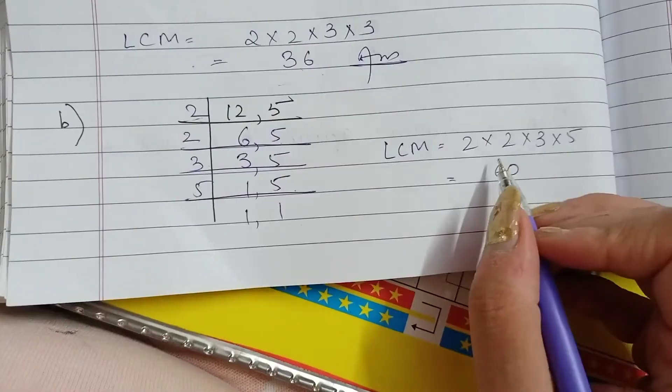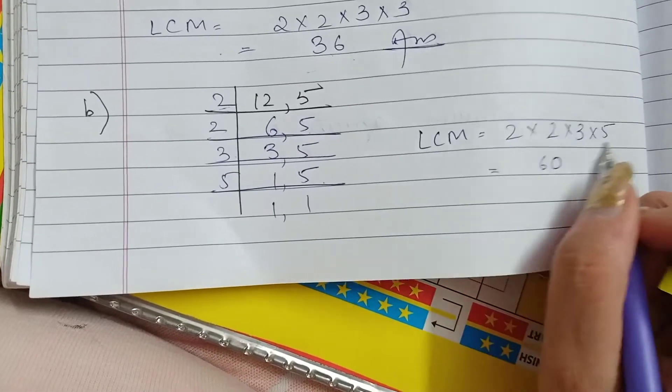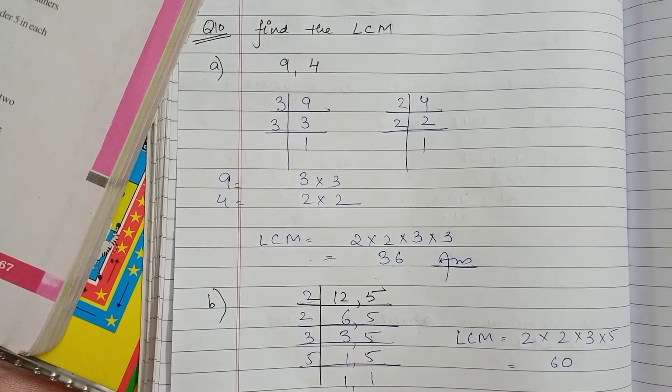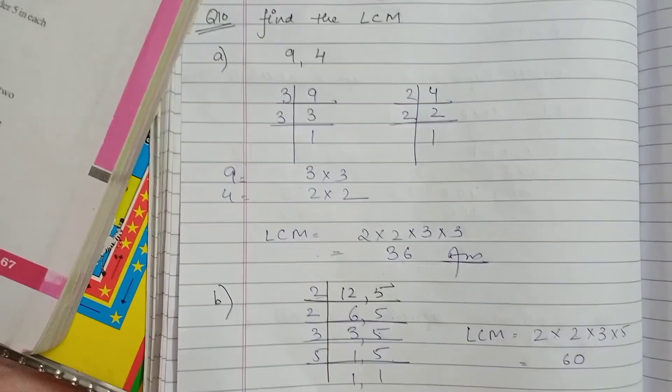We will multiply these numbers to get our LCM. 2, 2 are 4. 4, 3 are 12. 12, 5 are 60. So you can follow any method and you can do the remaining parts as well. This was your question number 10 of exercise 3.7.